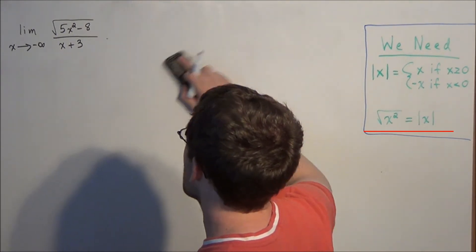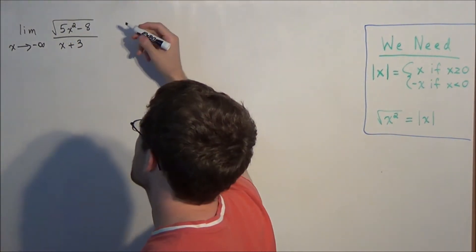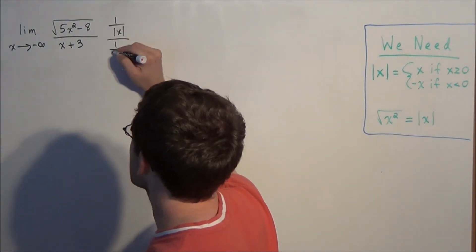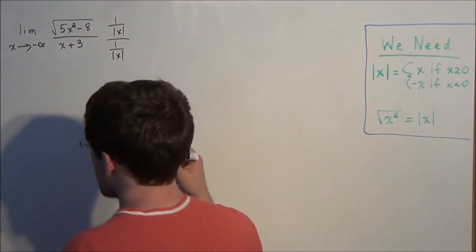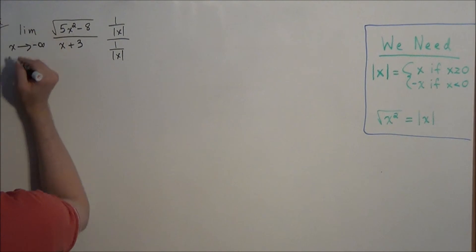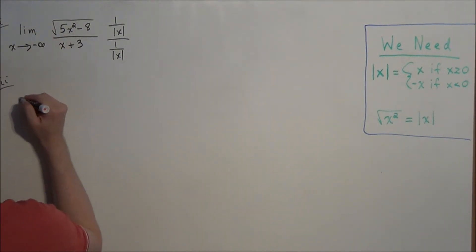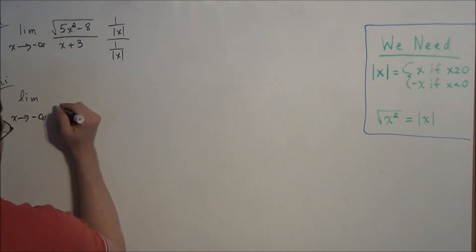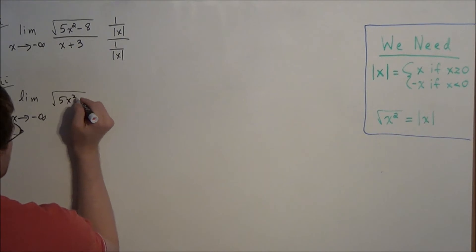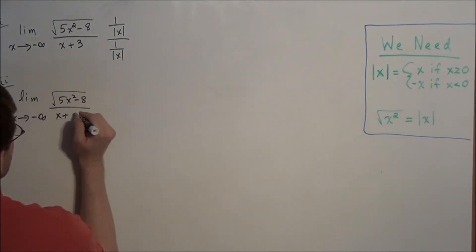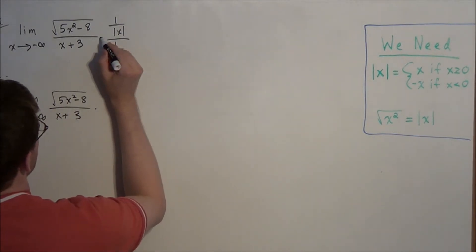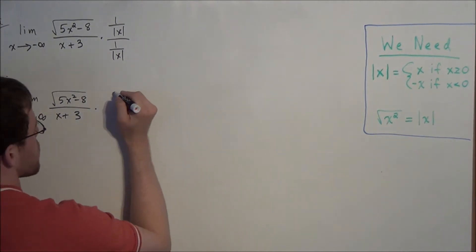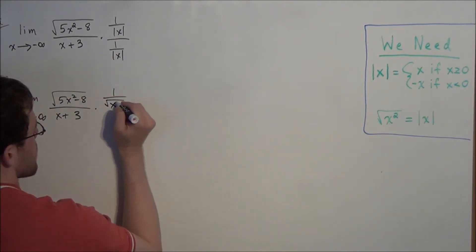So instead of dividing the numerator and denominator by x, we're going to divide by the absolute value of x. For the next line, we have the limit as x approaches negative infinity of the square root of 5x squared minus 8 divided by x plus 3, times 1 over the absolute value of x — which we can write as 1 over the square root of x squared.